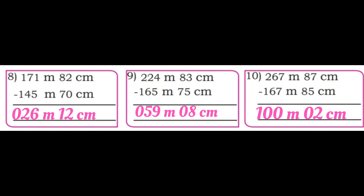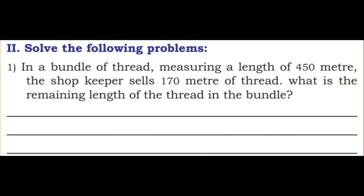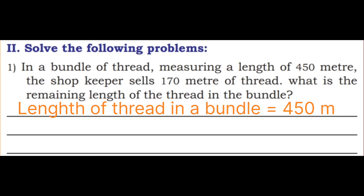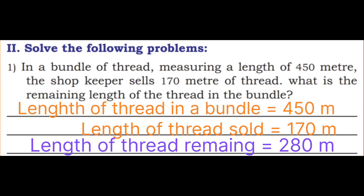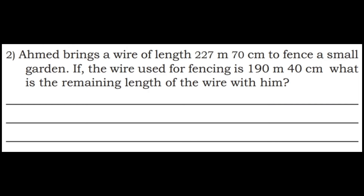Second section: solve the following word problems. Q1: In a bundle of thread measuring a length of 450 meter, the shopkeeper sells 170 meter of thread. What is the remaining length of the thread in the bundle? Length of thread in the bundle = 450 meter. Length of thread sold = 170 meter. Remaining: 0 minus 0 is 0, 5 minus 7 borrow: 15 minus 7 is 8, 3 minus 1 is 2. Answer: 280 meter.